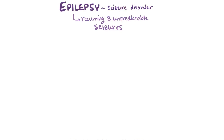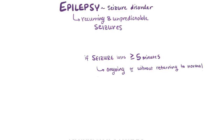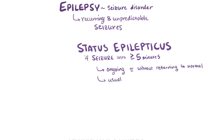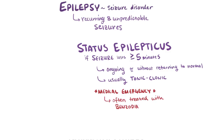If seizures last for a longer period of time — like over 5 minutes of ongoing seizures, or having multiple seizures without returning to normal in between — then it's called status epilepticus. These are usually the tonic-clonic subtype, but can also be caused by other types that don't involve convulsions. This situation is considered a medical emergency and can be life-threatening if not treated immediately. Patients are often treated acutely with benzodiazepines, which help enhance the effect of the inhibitory neurotransmitter GABA.